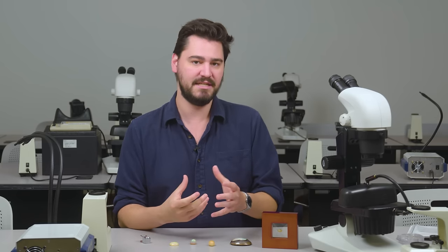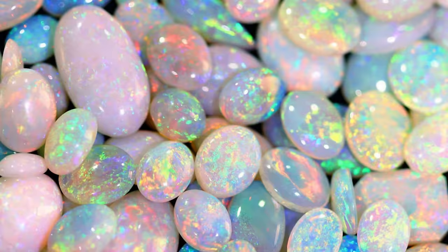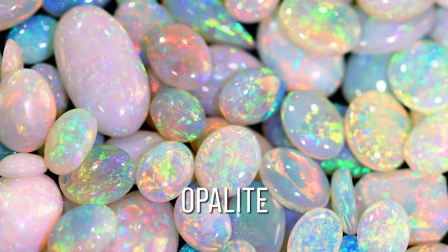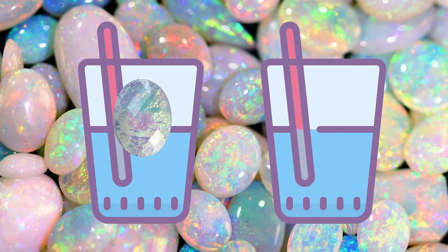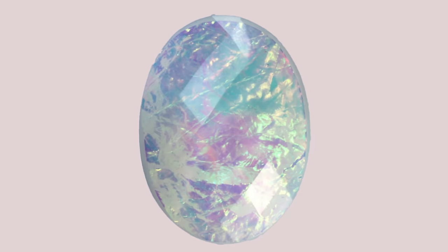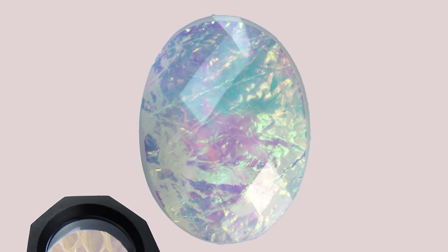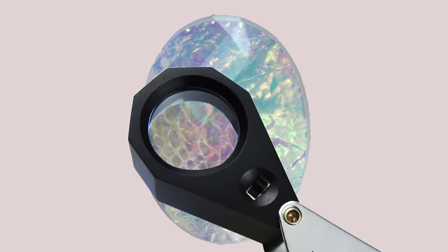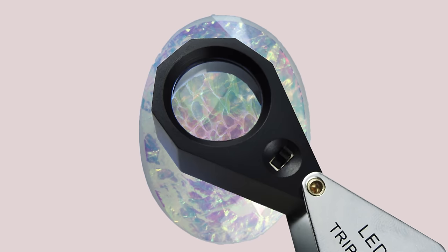Since the late 1970s, plastics have been used to simulate opals, often using the trade name opalite. Most of this stuff floats in water, whereas natural opal will just sink. Viewed with a loupe, this material will often look scaly with what is known as a lizard skin or chicken wire pattern.